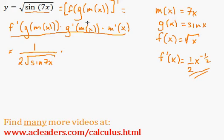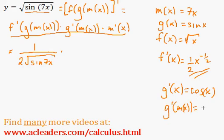Then we're going to multiply this by g prime of m of x. g prime of x is just the derivative of sine of x, which is just cos of x. So, g prime of m of x will just be cos of 7x. Because m of x is 7x, of course.